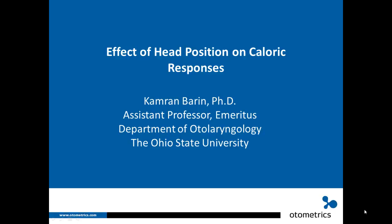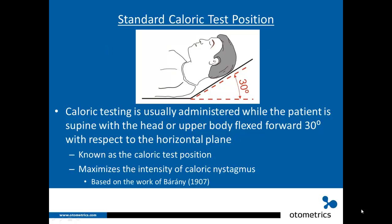What is the effect of head position on the caloric responses? Caloric testing is usually administered while the patient is supine with the head or upper body flexed forward 30 degrees with respect to the horizontal plane. This position is known as the standard caloric test position, based on the work of Robert Barany in the early 1900s. It places the lateral semicircular canals in the plane of gravity and maximizes the intensity of caloric nystagmus.